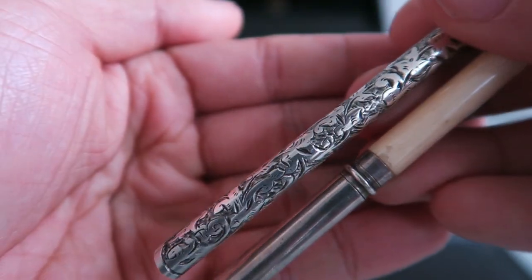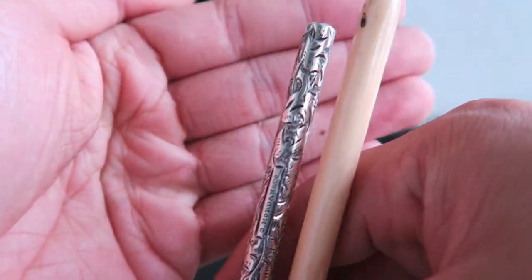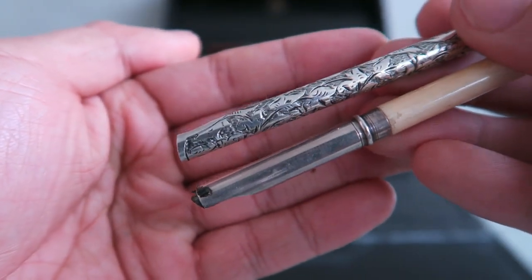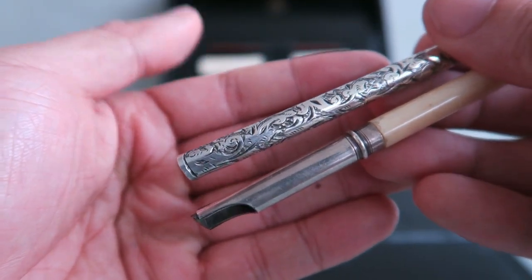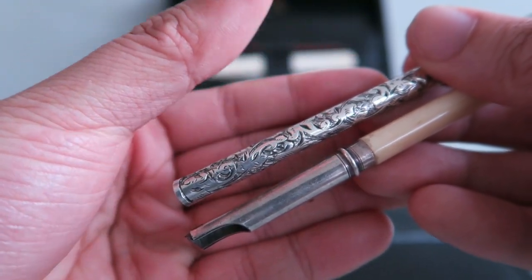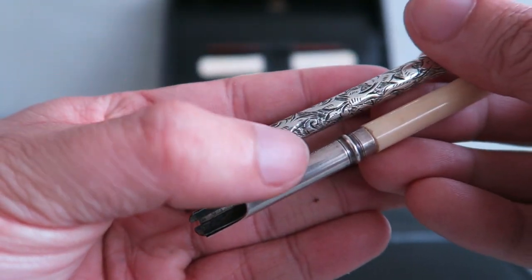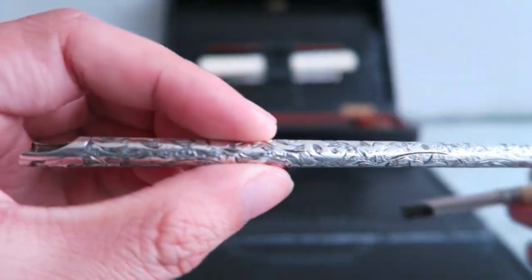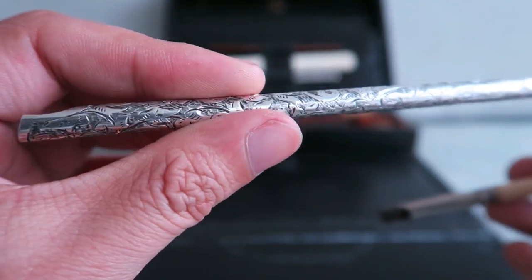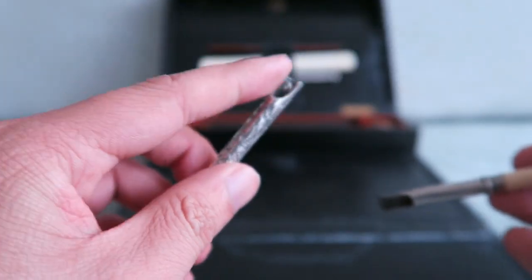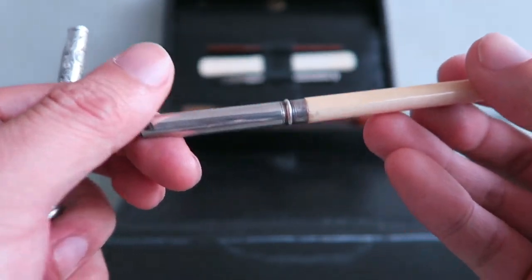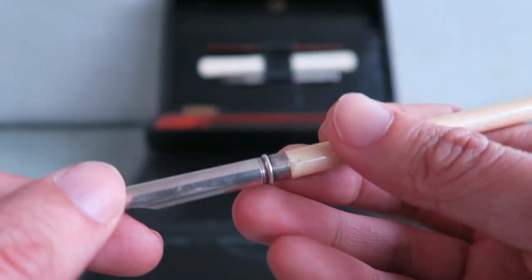And what we have here are two dip pens from the late 1800s. One is solid sterling silver. The other one is sterling silver and ivory. This one is about 1875, thereabouts. This one is 1901. So, this is right at the start of the 20th century.